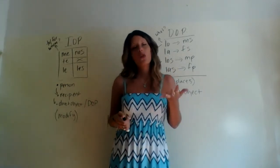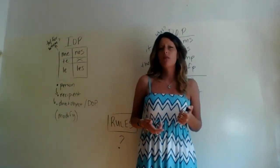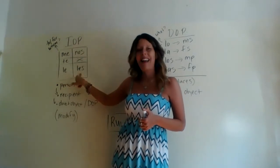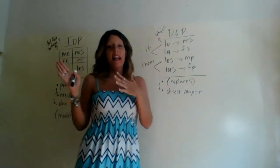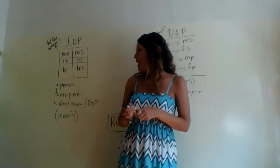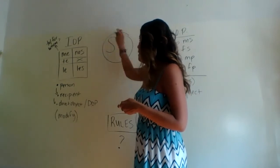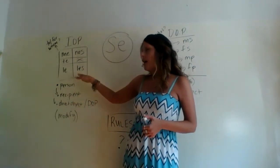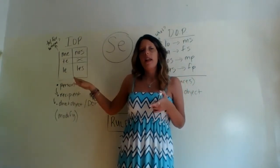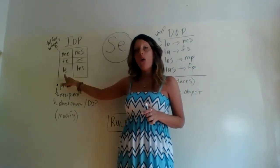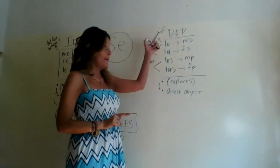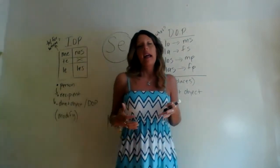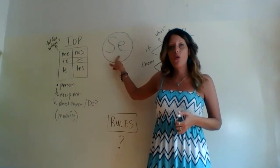Rule number five — and this is one most students have seen before but sometimes don't know how to use: whenever you use the IOP 'le' or 'les' with any DOP — lo, la, los, or las — 'le' and/or 'les' must change to 'se' (S-E). So it's not every time you use 'le' or 'les' — it's specifically when you're using 'le' or 'les' together with any DOP. In that case, 'le' or 'les' will both change to 'se.'